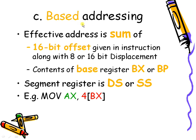In based addressing mode, the effective address is obtained by adding the contents of an offset register along with a displacement, which may be 8 or 16 bits. The offset register must be BX or BP, and the segment register is DS or SS. For example, in MOV AX, [BX+4], the contents of BX are added with displacement 4, and the data at the resulting address is copied into AX.